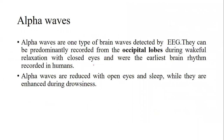Alpha waves are one type of brain waves detected by EEG. They are very commonly recorded from the occipital lobe. The occipital lobe is where alpha wave records can be observed — particularly during relaxation phases.